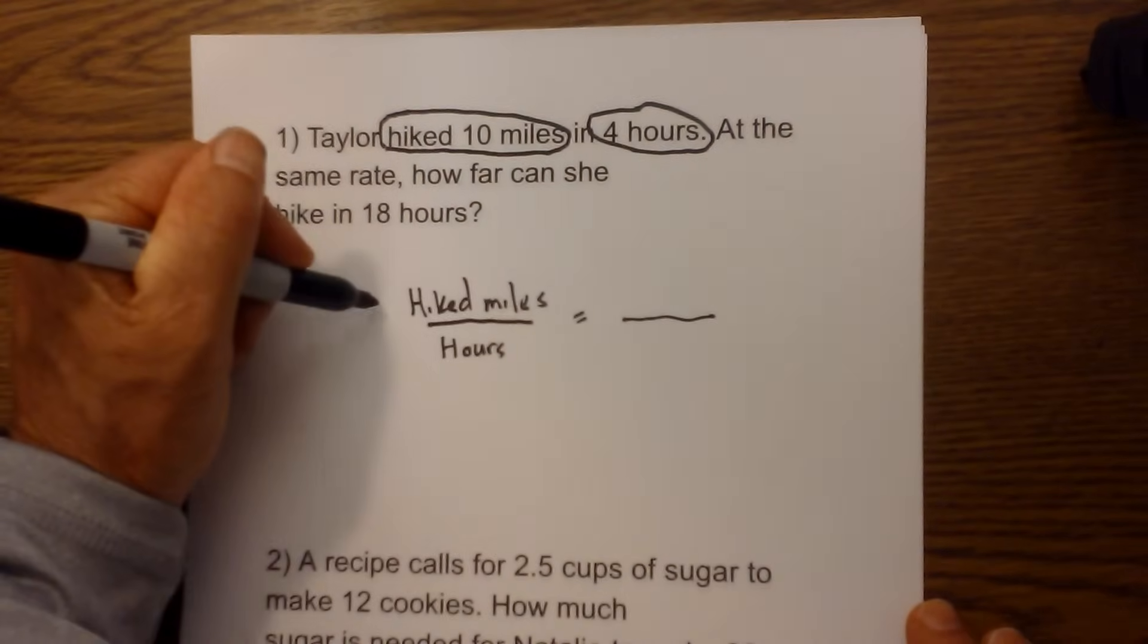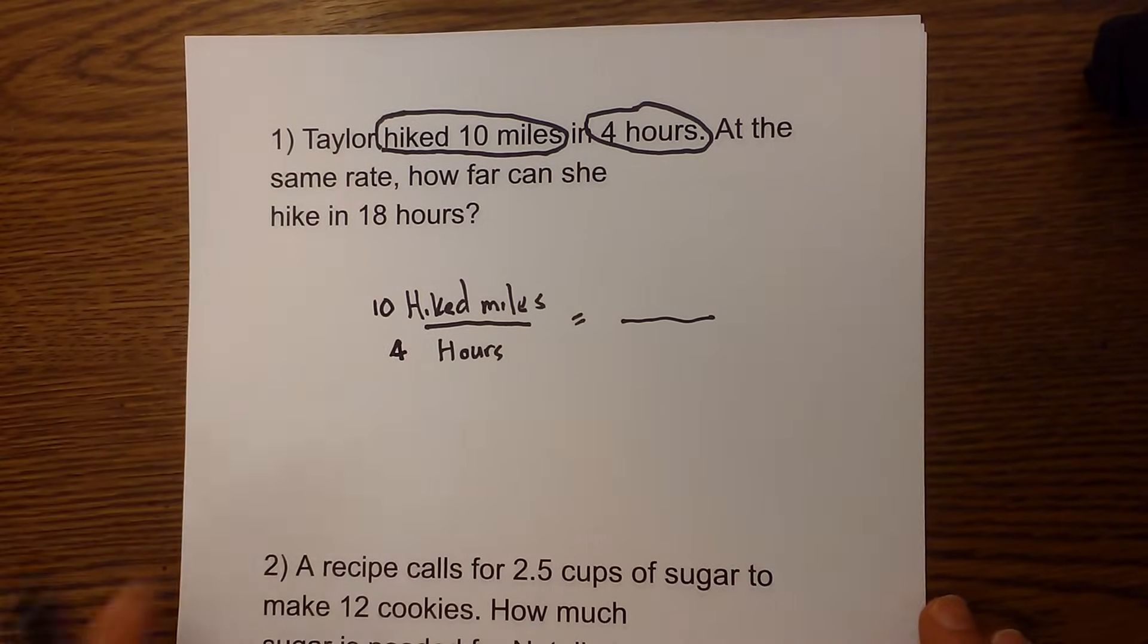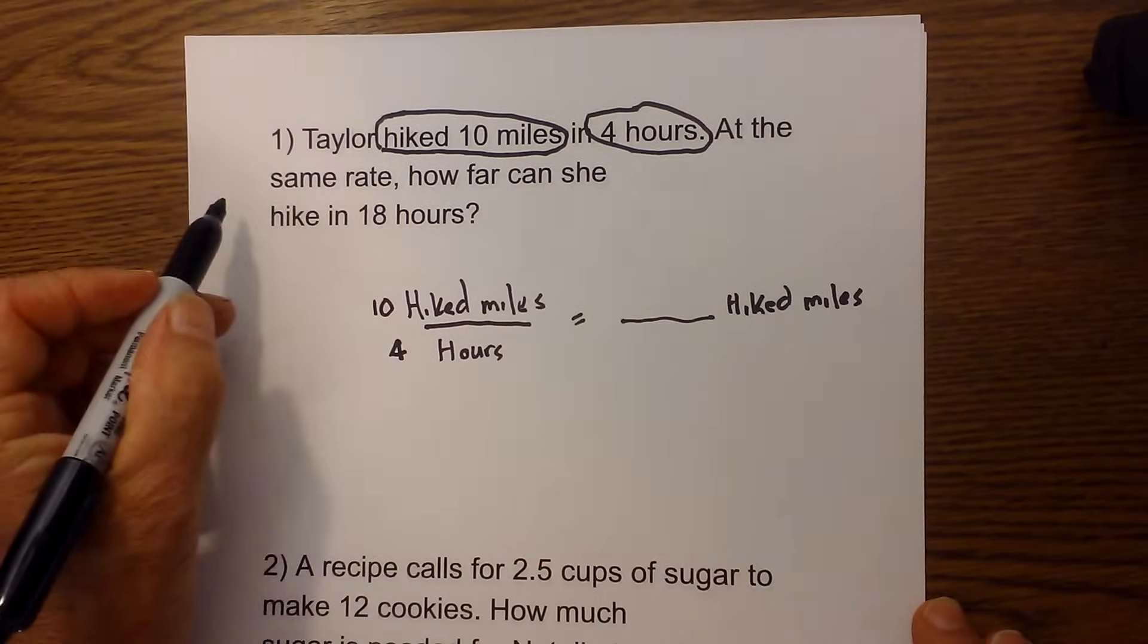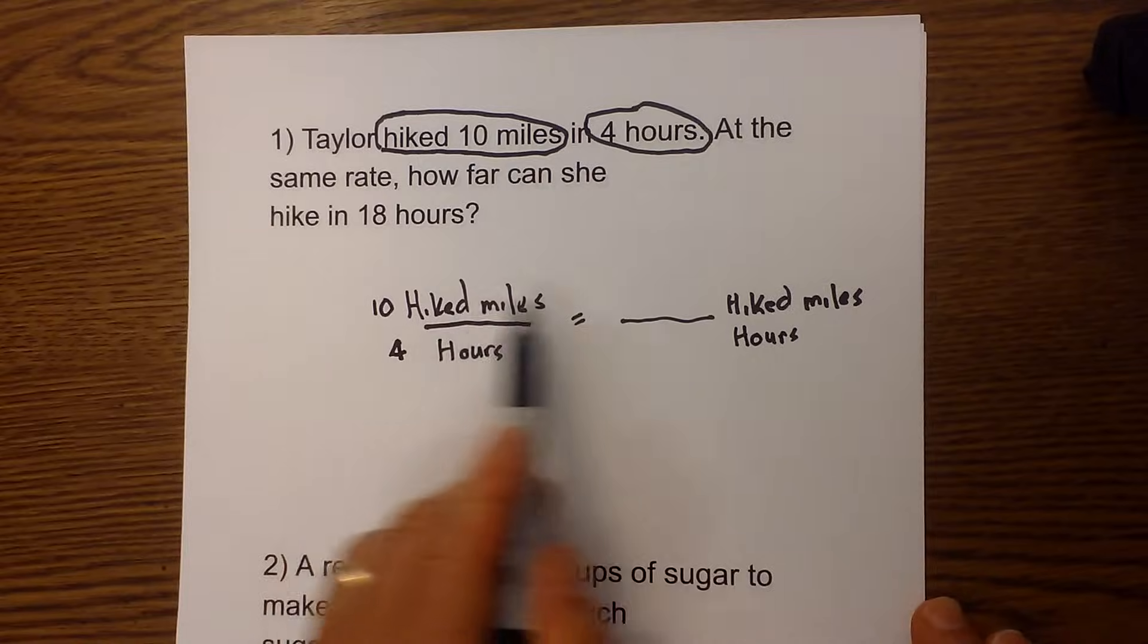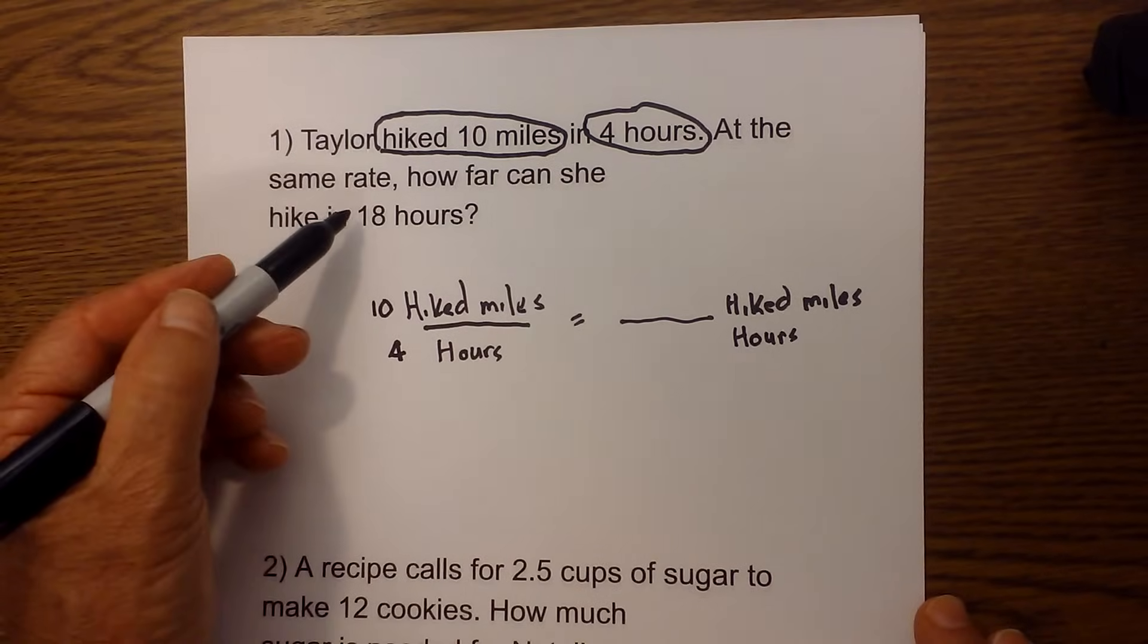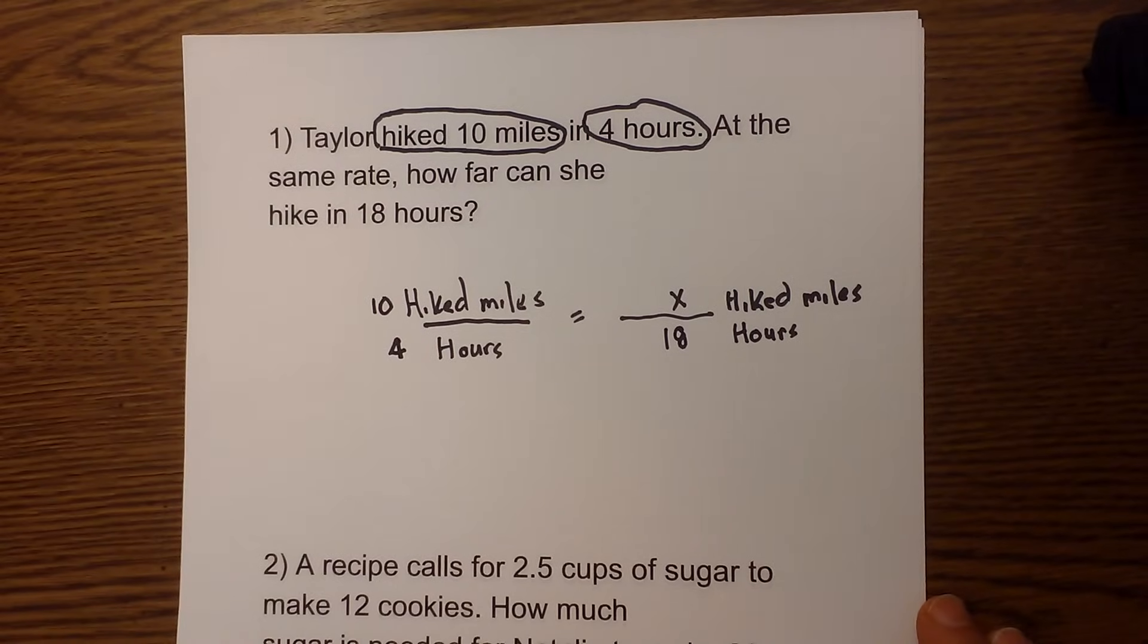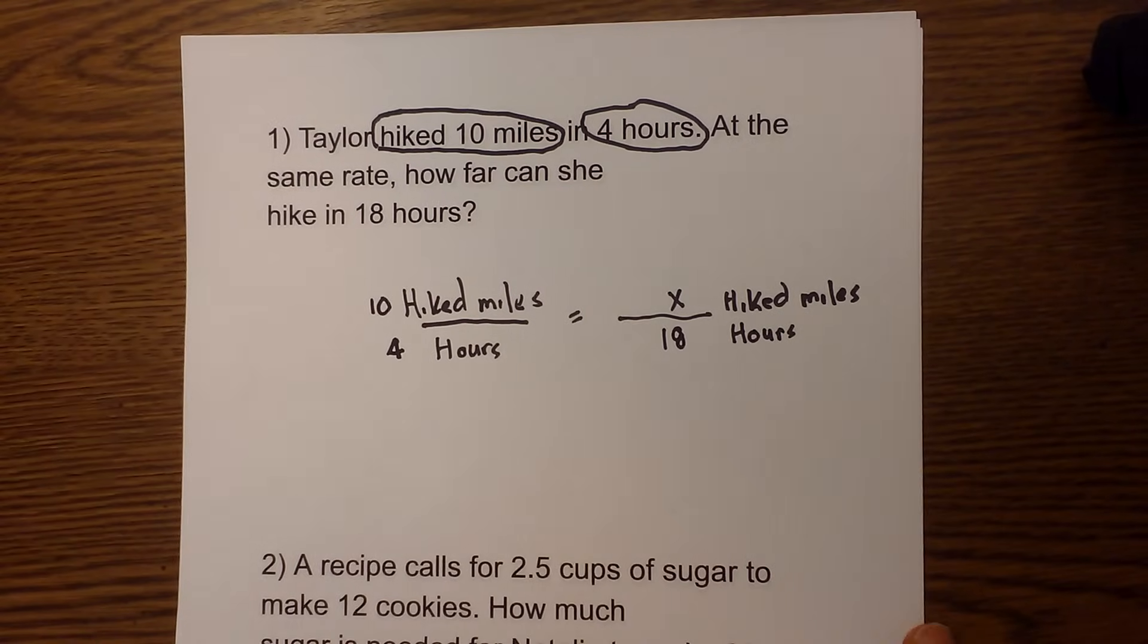Now we have ten miles in four hours. I then set up my next fraction, hiked miles, and I'm going to set that over hours just like before. So it should look identical: hiked miles, hiked miles, hours and hours. Then I'm going to plug in the units I have. I have 18 hours and I'm going to find X, which will be how many miles I will hike in 18 hours.